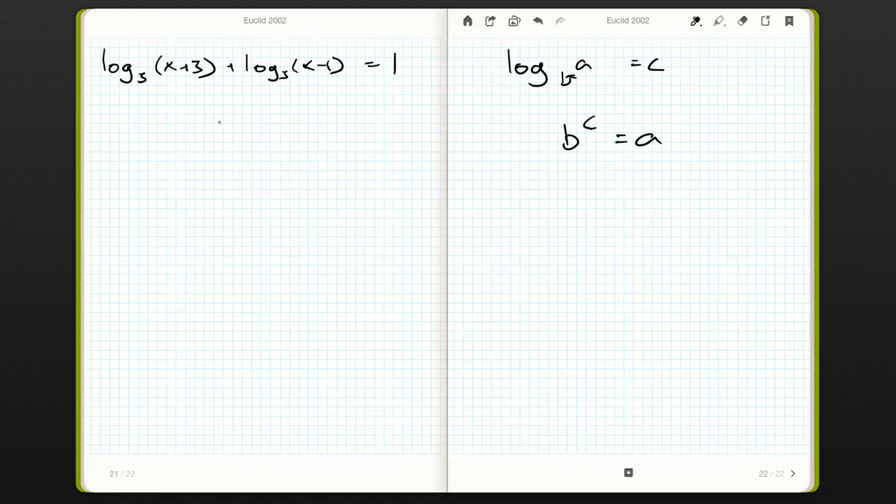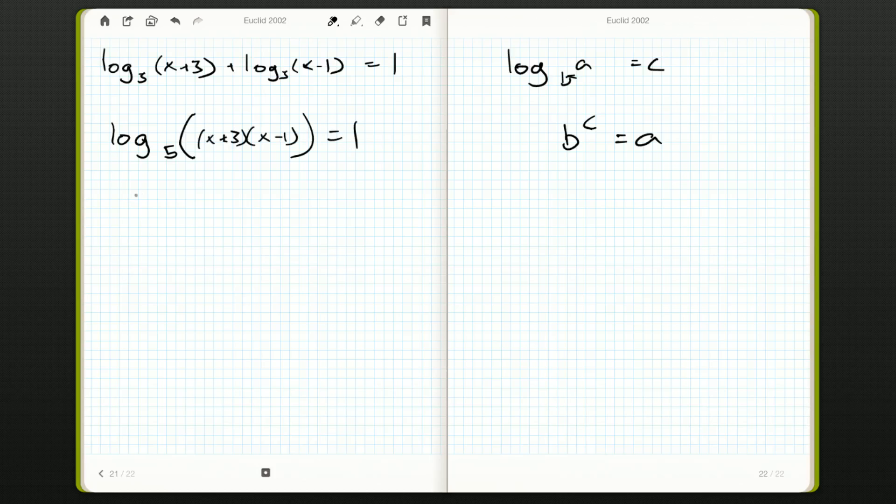Logarithms have some really nice properties. For example, the first one I'm going to use here is I got two logarithms added together. When we add logarithms, if they have the same base, and they do, base 5, we can actually multiply their contents and get a single logarithm. So log base 5 of (x plus 3) times (x minus 1) equals 1. Then we can use the definition to rearrange: x plus 3 times x minus 1 equals 5 to the 1, so that's equal to 5.